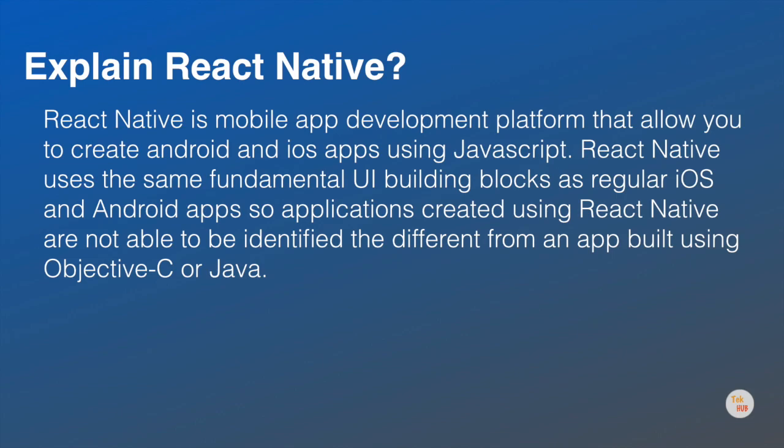React primitives render to native platform UI, meaning your app uses the same native platform APIs other apps do. Create platform-specific versions of components so a single codebase can share code across platforms. With React Native, one team can maintain two platforms and share a common technology.